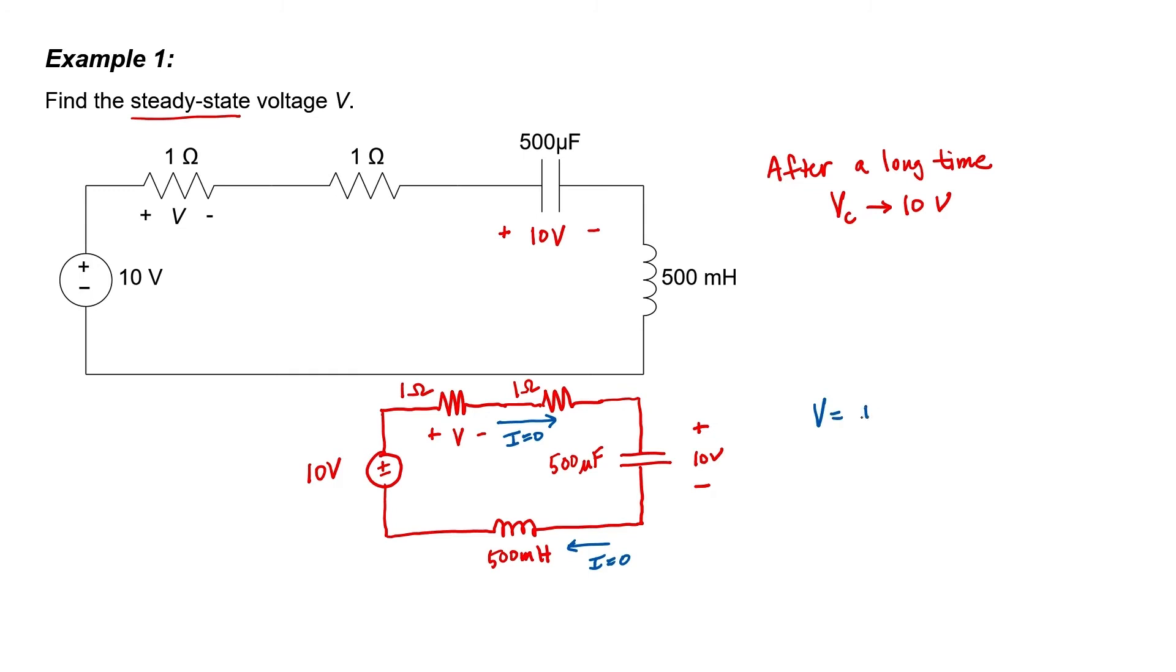Using Ohm's law, I know that V equals IR. The current is zero, the resistance is one ohm, therefore the voltage is zero. In steady state, or after a long period of time, no current flows through that resistor. Therefore, the voltage drop across it is zero.